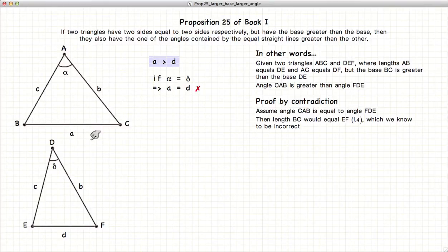In other words, the base BC would equal the base EF, or a equals d. But we've already stated that a is greater than d, so this cannot be true.